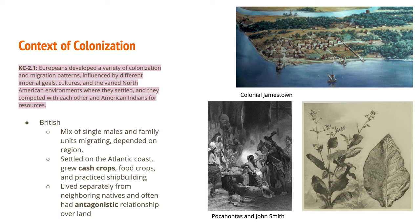Moving on to the British, we see a mix of single males and family units migrating, depending on the region — whether it be New England, the middle colonies, or the plantation southern colonies. The majority of the colonies were based in agriculture, growing cash crops like tobacco or food crops like wheat. In New England, shipbuilding was practiced because the land was not very good for farming. Because the British needed land to farm, they ran into a more antagonistic relationship with Native Americans. This is seen in Jamestown, where John Smith got into an altercation with the Powhatan tribe, and Pocahontas symbolically stepped in to save him.